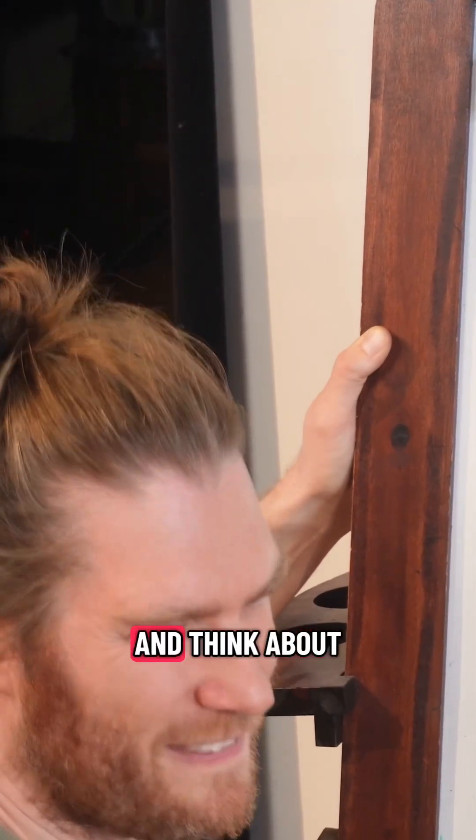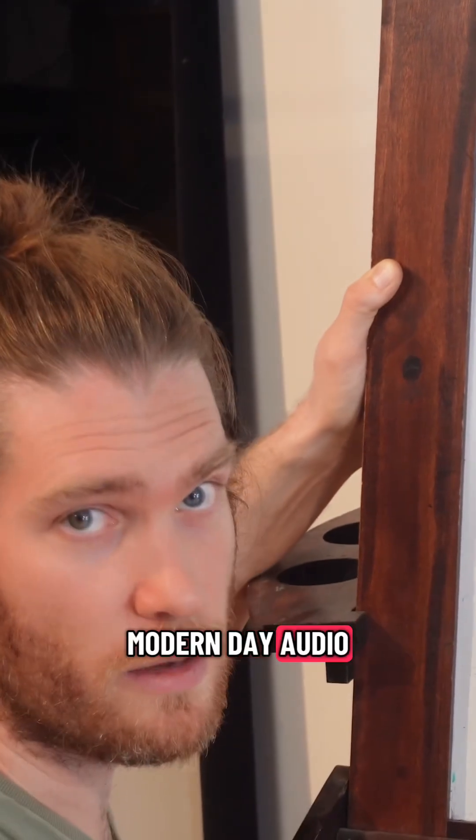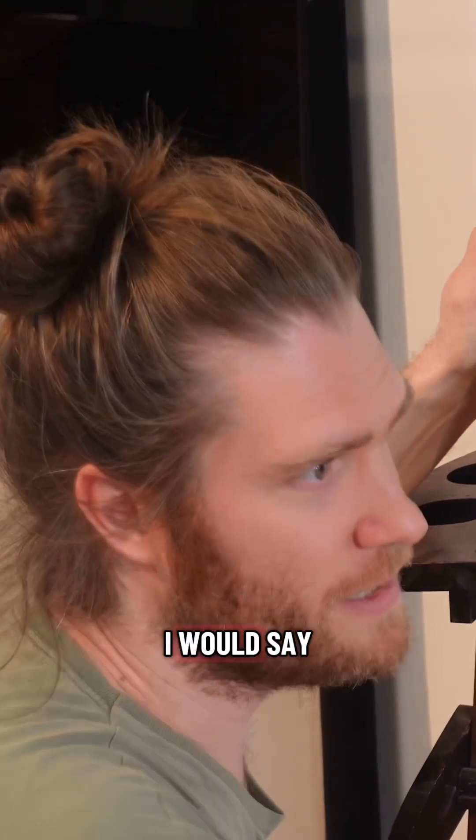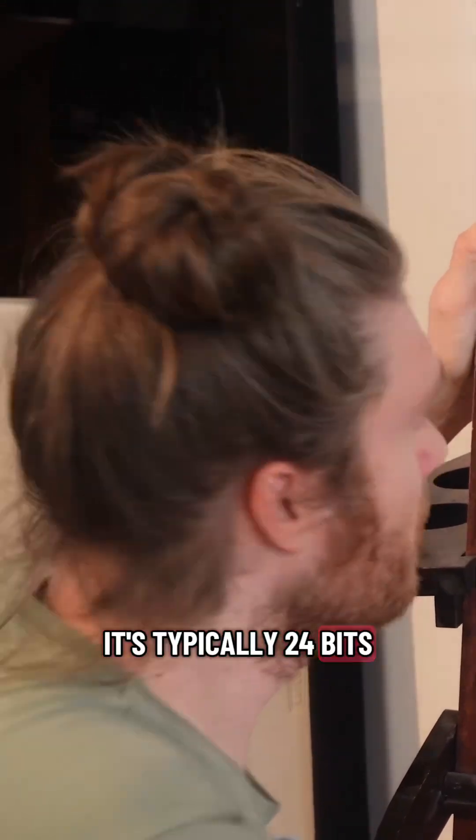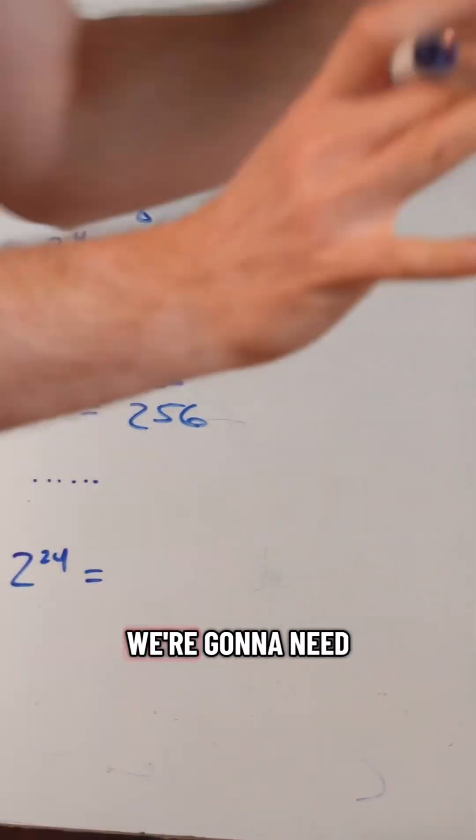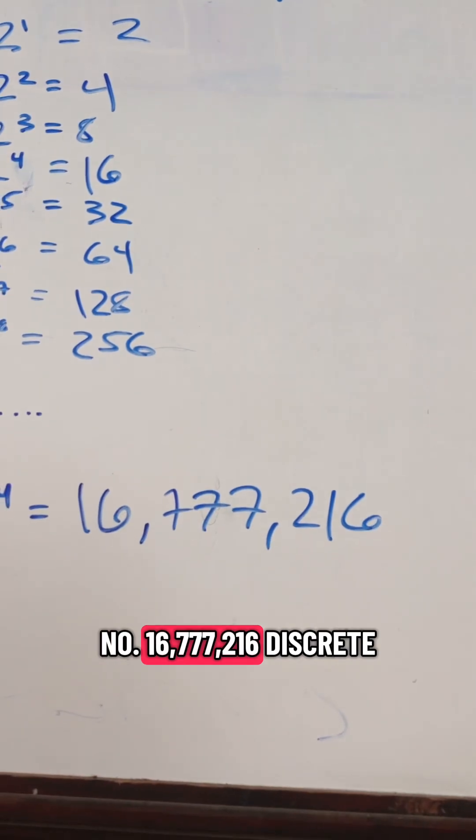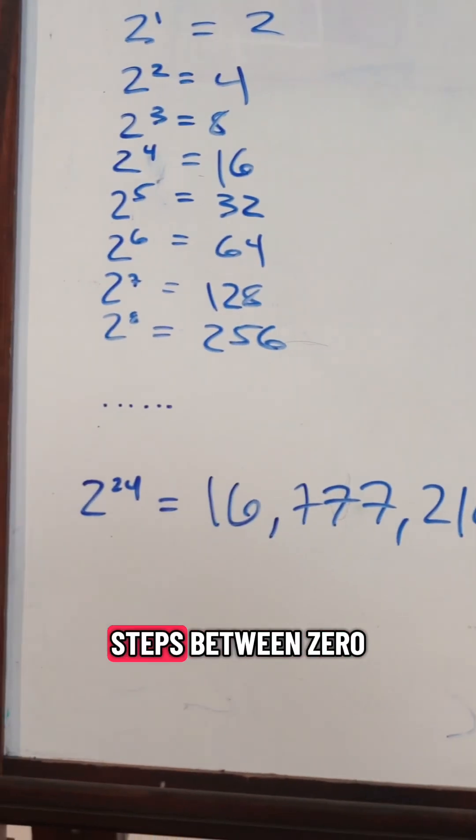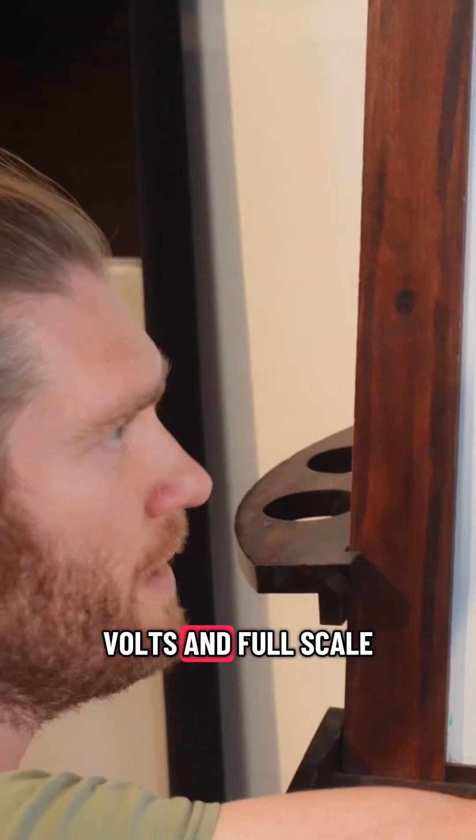But let's pause for a second and think about modern-day audio. Modern-day audio is typically 24 bits. So 2 to the power of 24. We're going to need a calculator. That's a big number. 16,777,216 discrete steps between zero volts and full scale.